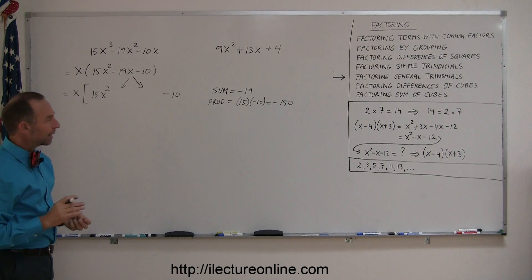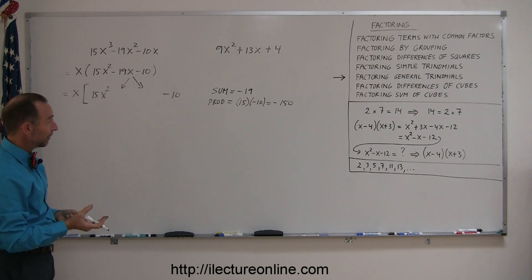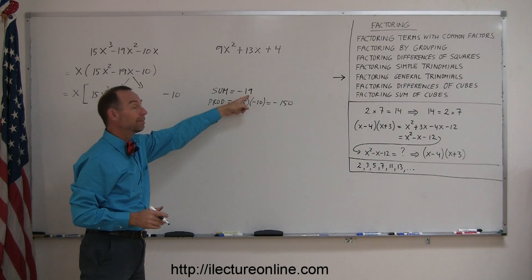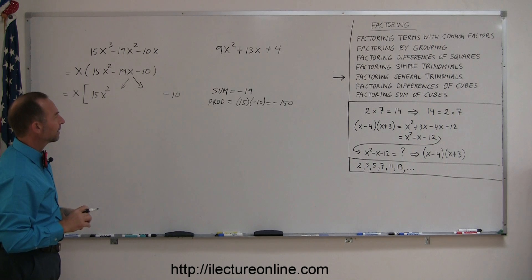Notice when you multiply and get a negative number that means one must be positive and the other one must be negative, and the negative number is 19 bigger than the positive number, or I should say the difference between them is 19.